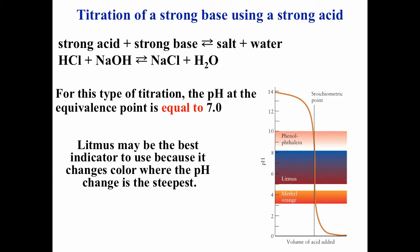Looking at a few different indicators — phenolphthalein, litmus, and methyl orange — you want the indicator to change color as close to the equivalence point as possible. In this case, litmus actually changes color closer to the equivalence point than phenolphthalein or methyl orange, so litmus may be the best choice of indicator for this titration.